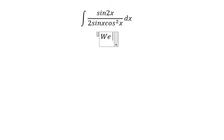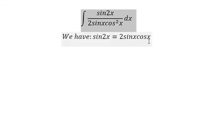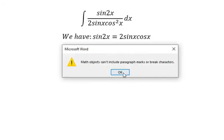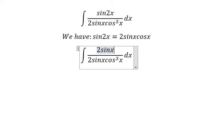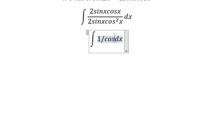We have sin2x equal to 2sinx cosx. So we change sin2x into 2sinx cosx. Then we simplify 2sinx cosx and we will get about 1 over cosx.